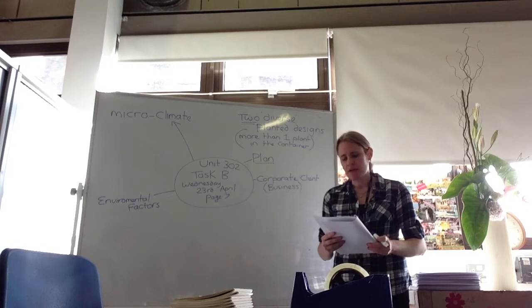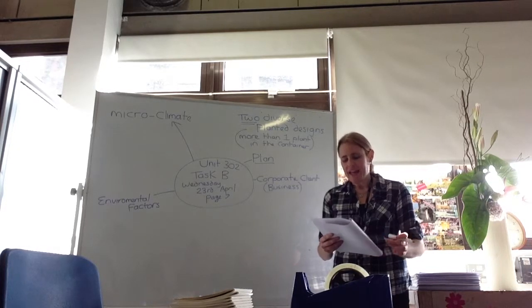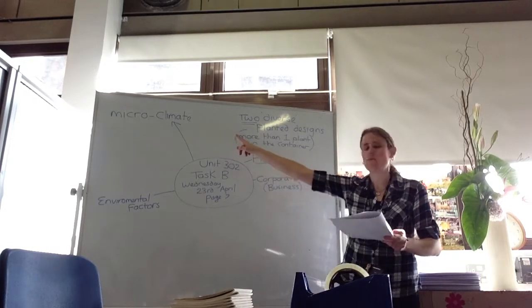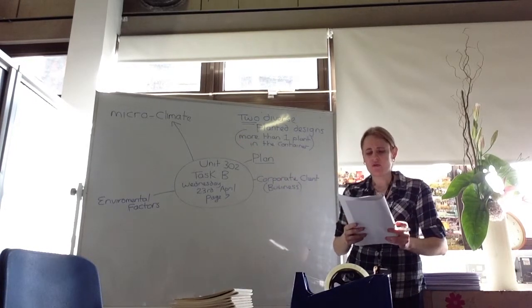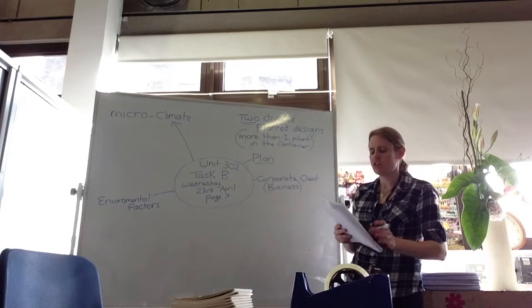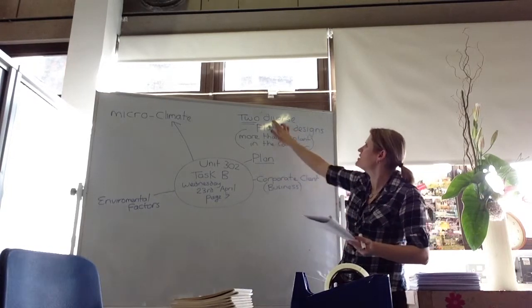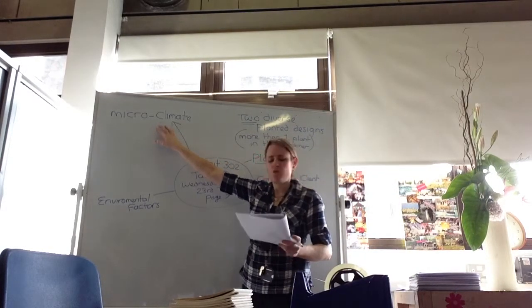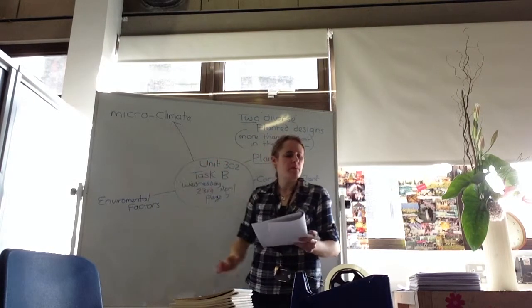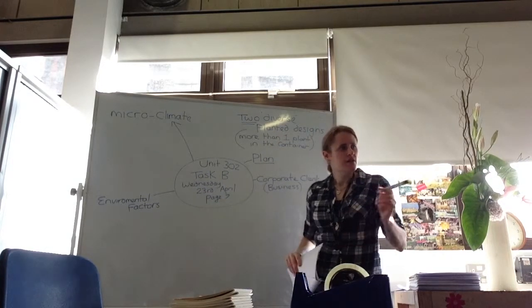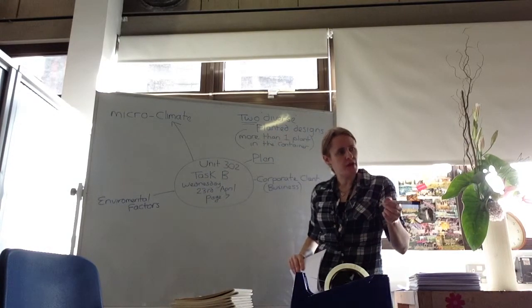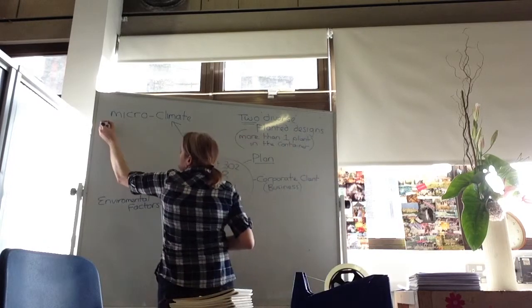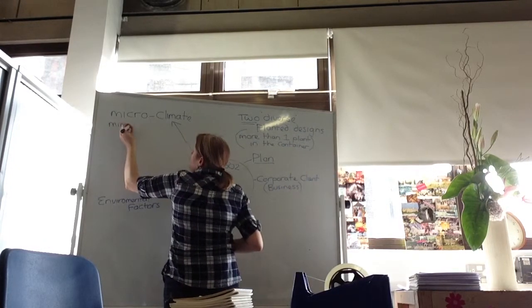So it says you're required to plan two diverse planted designs for a corporate client, each for a different microclimate. So you have to do that twice. With distinctive design features. Well, the distinctive design features will be diverse. So what does that tell you? What was microclimate? If you can remember what we covered. You said quite a good way of remembering it. Mini. Mini climate, yeah?